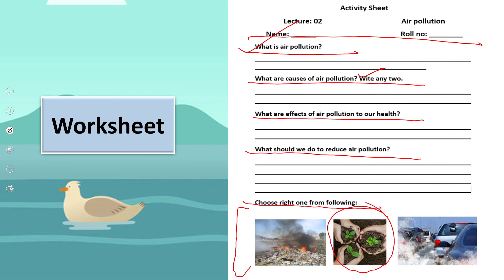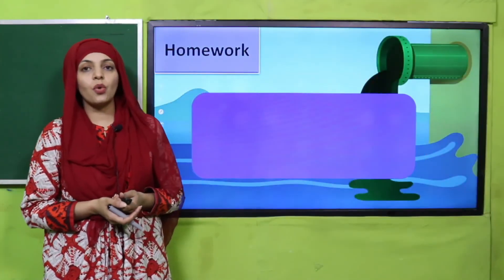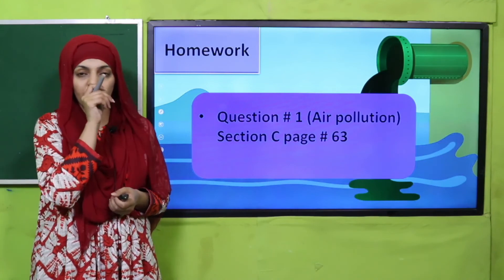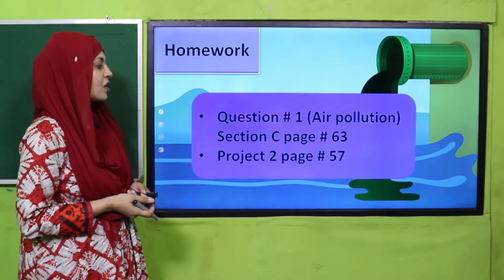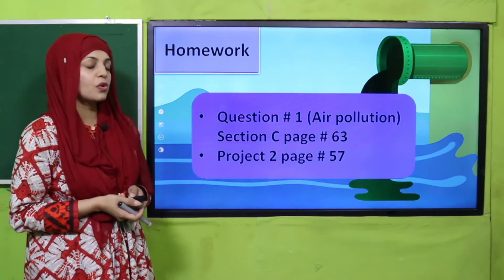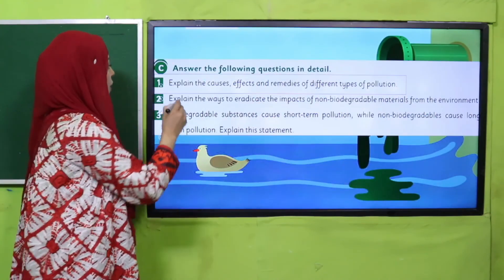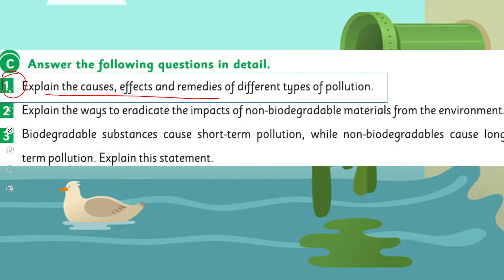Now it's time for practice. You can download the worksheet from the description box below this video, or get it in print form from your teacher. Write down your name and roll number, then answer: What is air pollution? What are the causes of air pollution — write any two. What are the effects of air pollution on our health? What should we do to reduce air pollution? For homework, do question number one, the air pollution part, in section C, page number 73, and also do project number two on page number 57. You will only do the air pollution portion today.